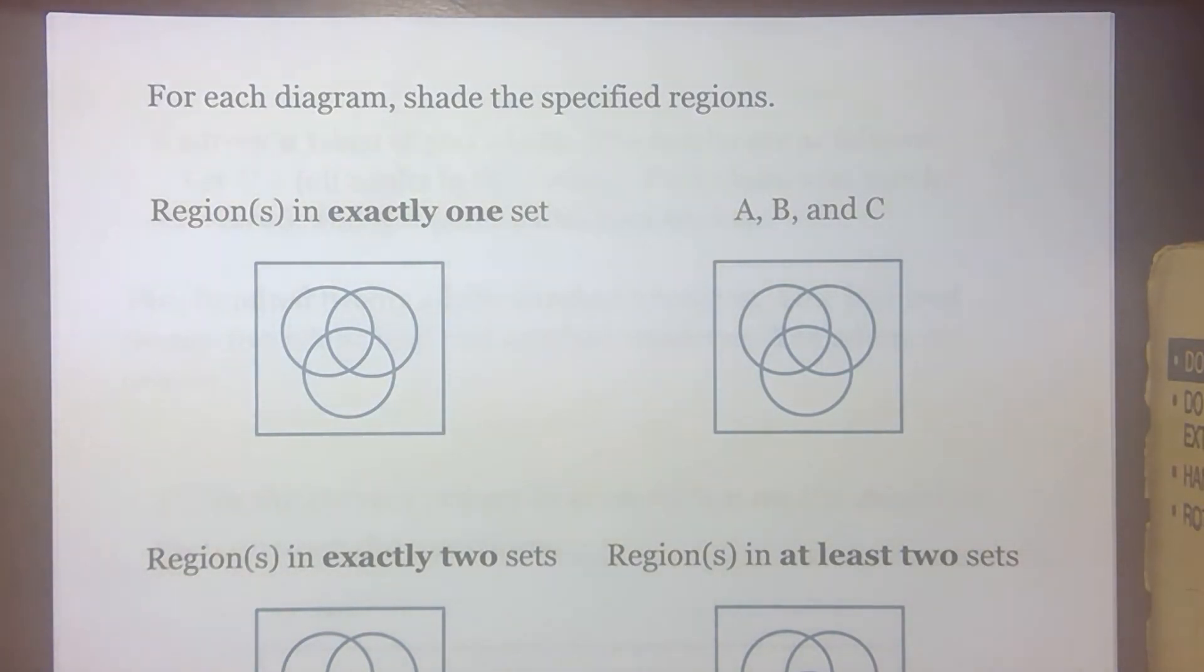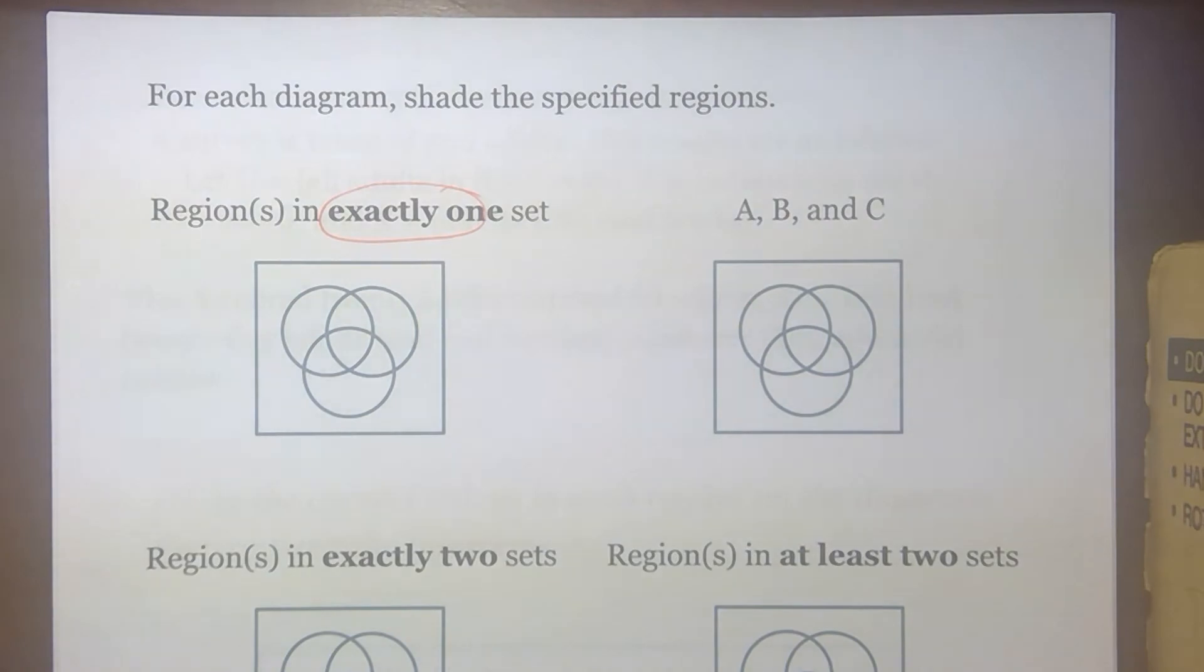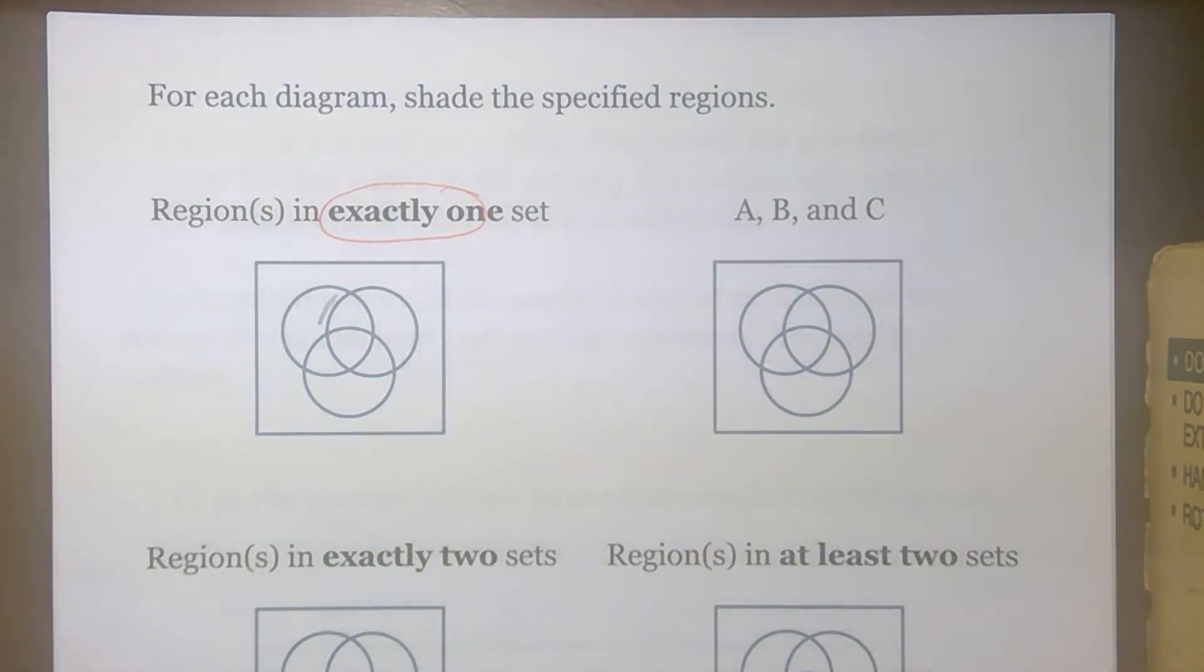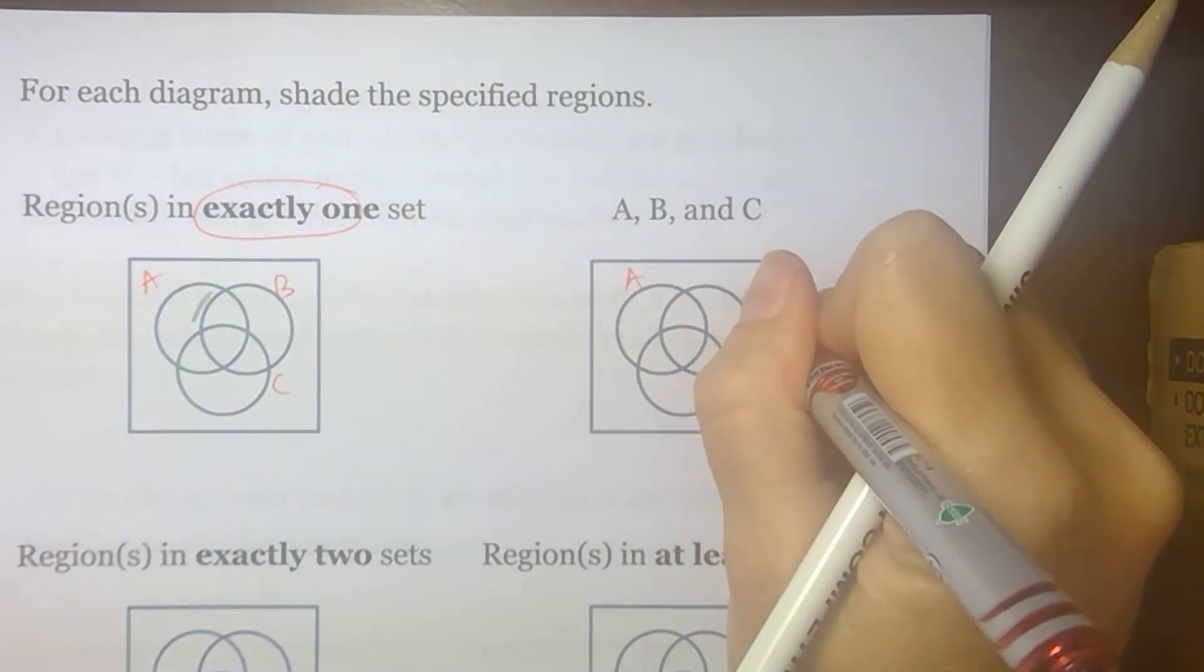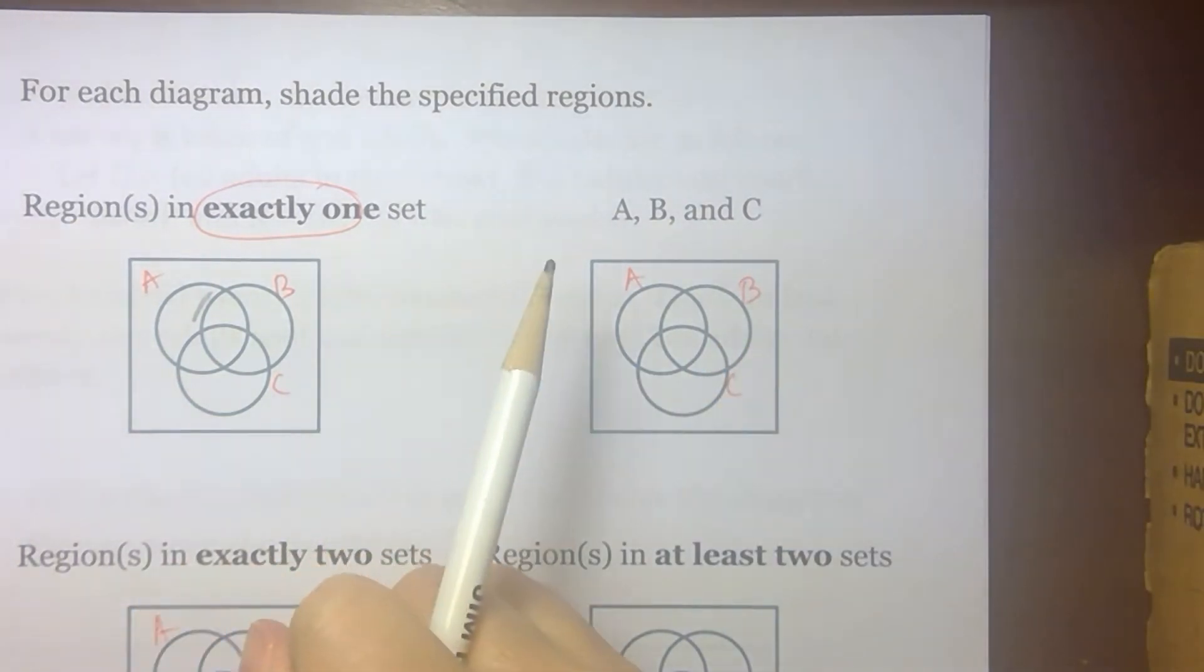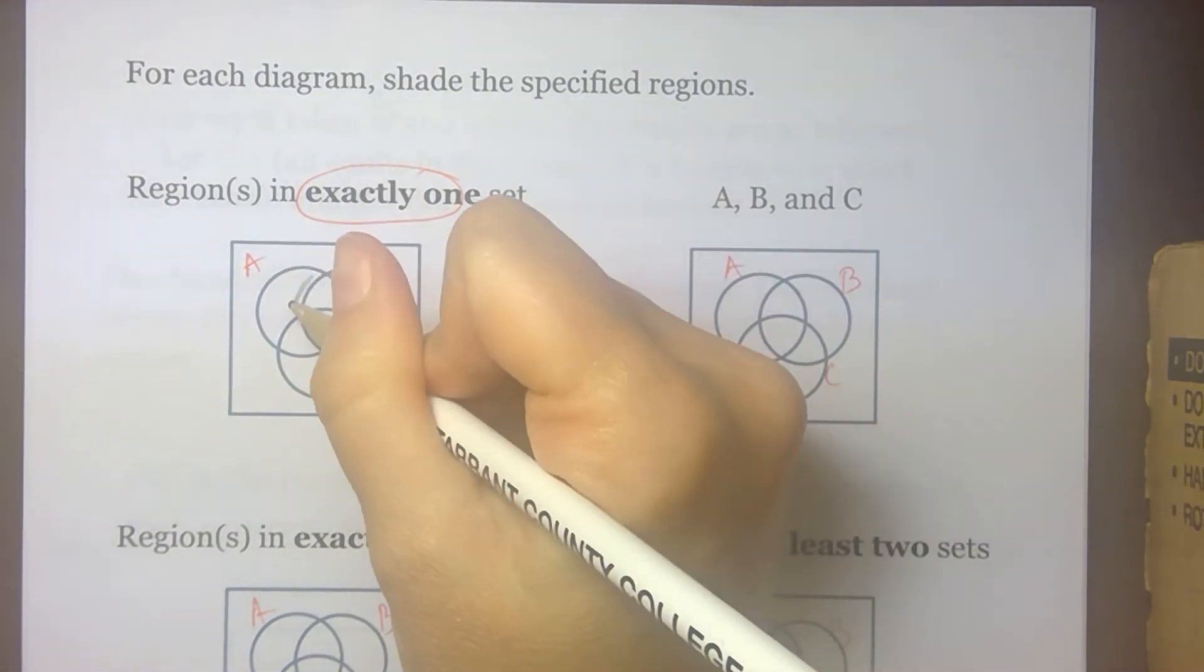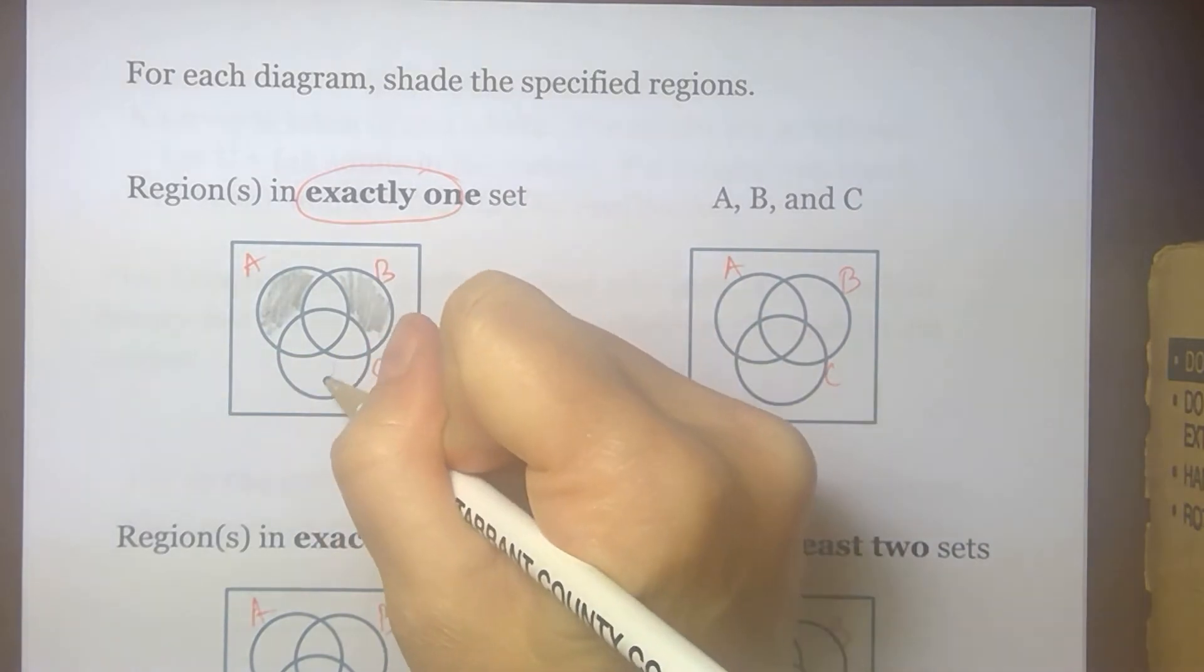So we're not going to focus on notation on this. We are just going to shade the specified regions. For this first one, we're looking for regions in exactly one set. I haven't named my sets. They could be anything. But let's say, let's go ahead and label our loops just as ABC. Because that's what we're used to. But in reality, we could be talking about any loops, any regions. Regions in exactly one set would be those regions that are just A, just B, or just C.